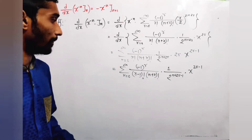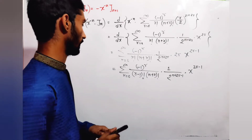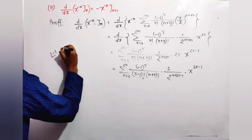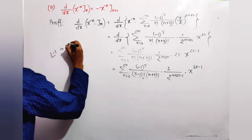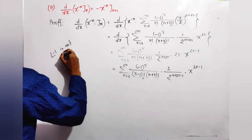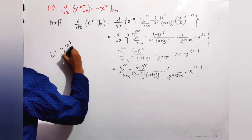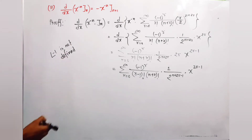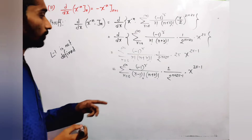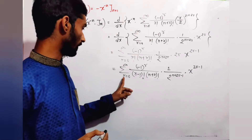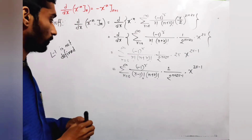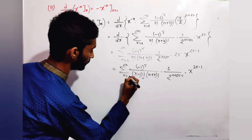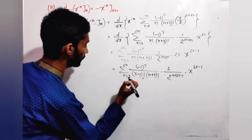When r=0, the term contains a factor of (n+2·0 - 1)! in a form that makes the r=0 term undefined or zero — specifically, the (n+0) factor with the derivative produces a vanishing term. Therefore the summation effectively starts from r=1.